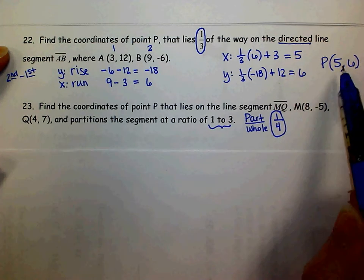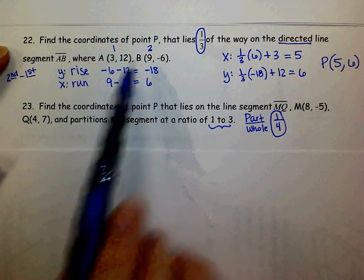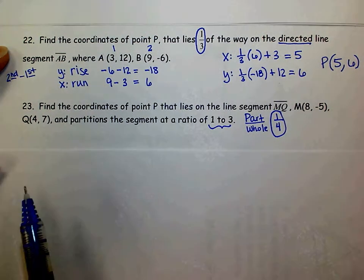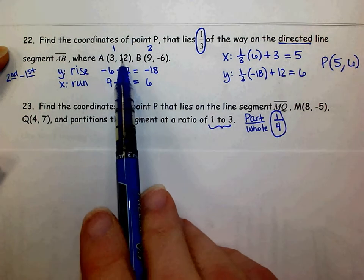Make sure your x-coordinate is between the x-coordinates of the points given, and your y-coordinate is between the y-coordinates that are given, which positive 6 is between 12 and negative 6.